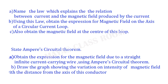Name the law which explains the relation between current and the magnetic field produced by a current-carrying conductor — that is Biot-Savart's law. Using this law, obtain the expression for the magnetic field on the axis of a circular current loop, and also obtain the magnetic field at the center of the loop.